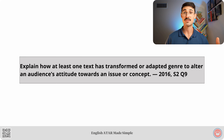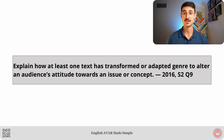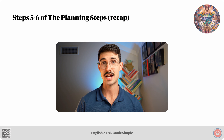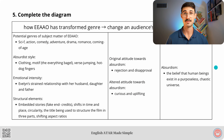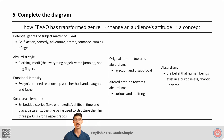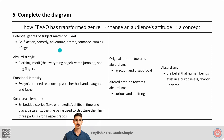That wraps up our discussion of example number one. Let's take a look at example number two. The relevant question is: explain how at least one text has transformed or adapted genre to alter an audience's attitude towards an issue or concept. We're analysing Everything Everywhere All At Once for this question. Here's a recap of steps five and six of the planning steps. Starting with step five — complete the diagram. Our first element of the question is how Everything Everywhere has transformed genre. We outlined what the potential genres of Everything Everywhere could be — the one we focused on was sci-fi. Everything Everywhere transforms the sci-fi genre through its absurdist style, emotional intensity, and structural elements.